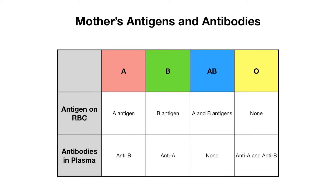We also have other cells besides our RBCs which express A and B antigens. Let's look at mom's antigens and antibodies depending on blood group type. If mom has blood type A, she has the A antigen on her RBC surface and anti-B antibodies in plasma. If she is blood type B, she has the B antigen on her RBCs and anti-A antibodies in plasma. If she is blood type AB, she has both A and B antigens and therefore no anti-A or anti-B antibodies. With blood type O, there are neither A nor B antigens, so mom has both anti-A and anti-B antibodies.